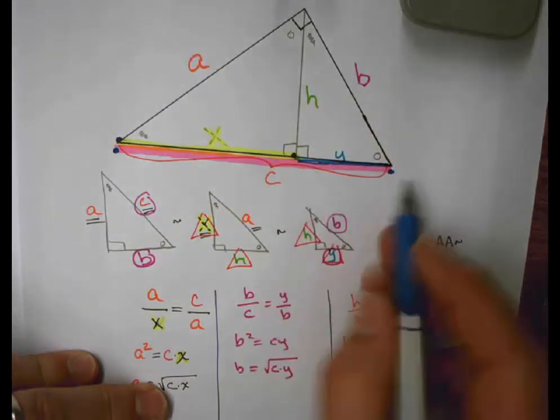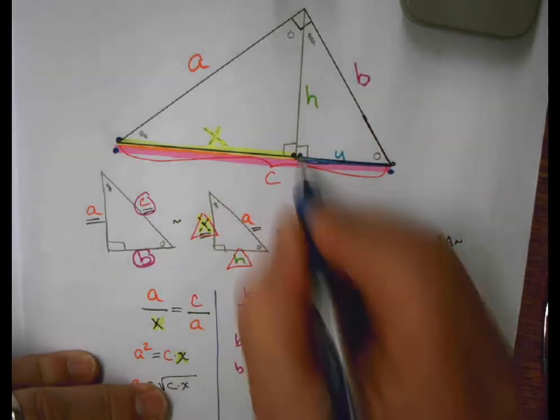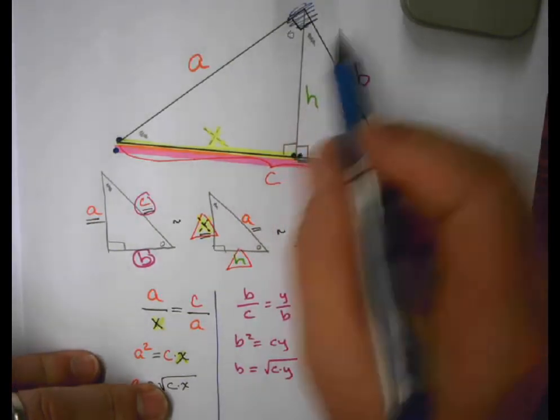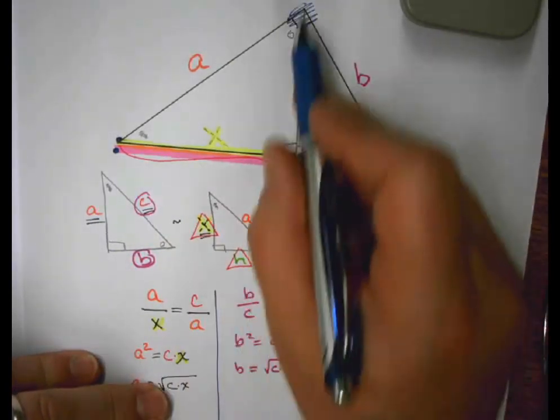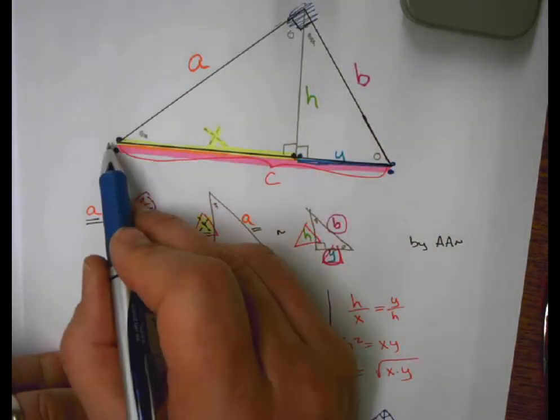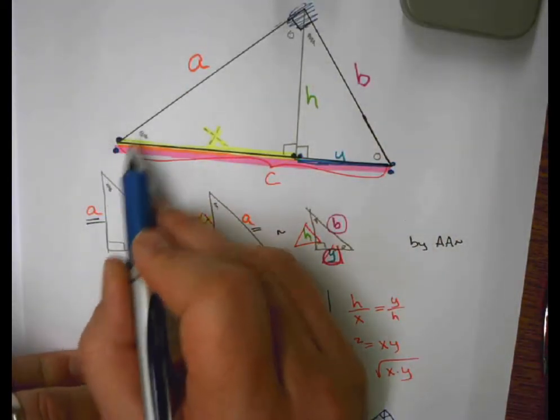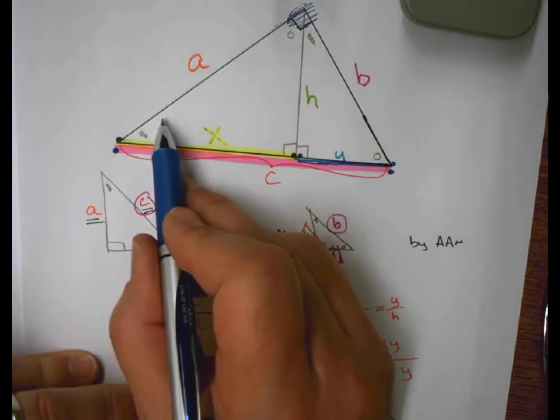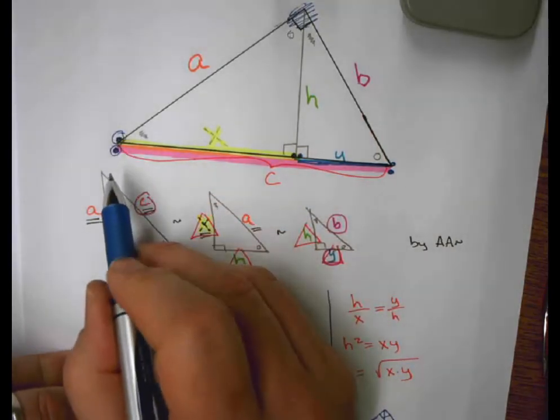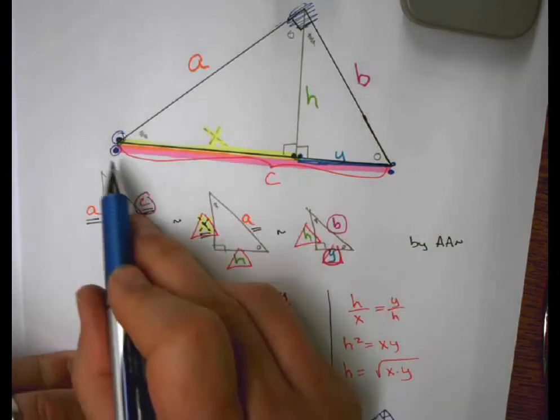The blue segment Y has an end point there and an end point there. And what we're looking at is the segments that extend from the right angle. The one that extends from the right angle in this direction takes me to this corner. So this segment A is the geometric mean of the two segments whose end points it touches, X and C.